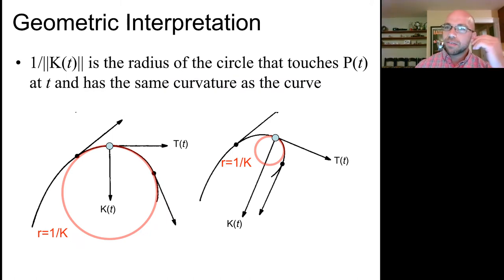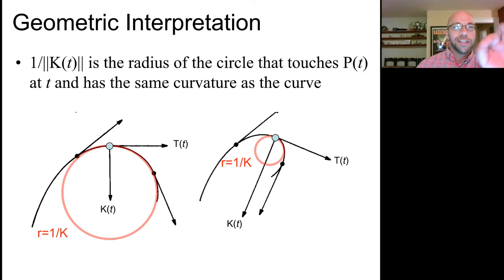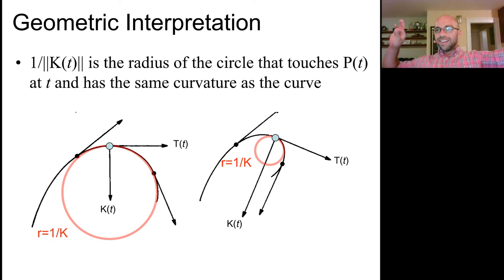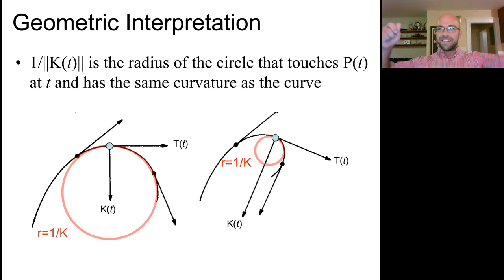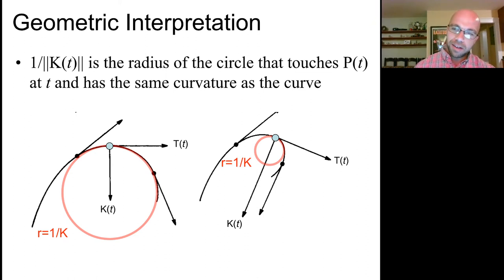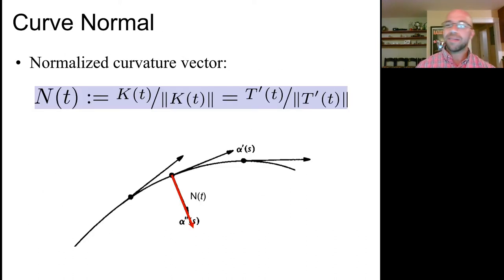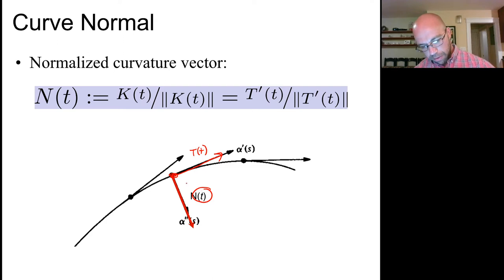Another interpretation: 1 over the curvature magnitude is the radius of a circle that just barely touches your curve. As a sanity check, if curvature is 0, the curve is a line, and 1/0 is infinity — like the radius of a really enormous circle. Normalizing the curvature vector gives the normal vector to your curve. In 2D, the tangent vector points parallel to the direction you're driving and the normal vector points 90 degrees to the right.